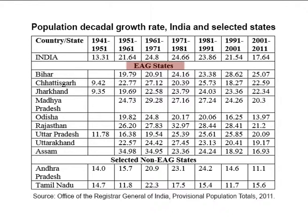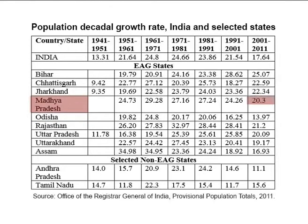Among the EAG states, the highest growth rates were recorded in Bihar and Chhattisgarh at 25.1% and 22.6% respectively, followed by Jharkhand at 22.3%, Rajasthan at 21.2%, Madhya Pradesh at 20.3%, and Uttar Pradesh at 20.1%. The selected non-EAG states have a considerably lower population growth rate: Andhra Pradesh at 11.1% and Tamil Nadu at 15.6%.